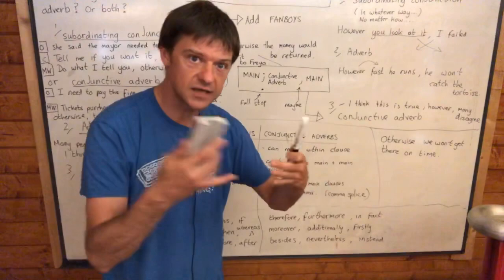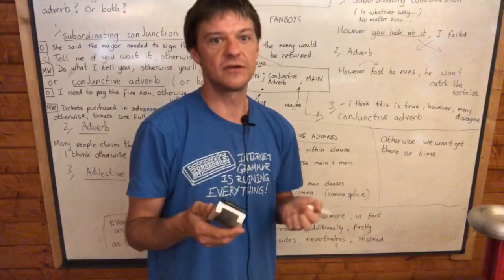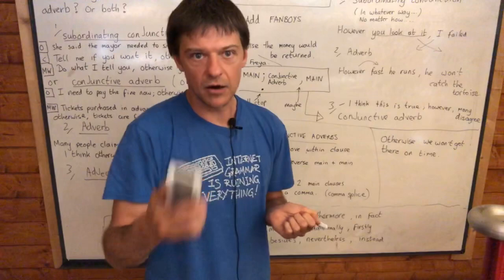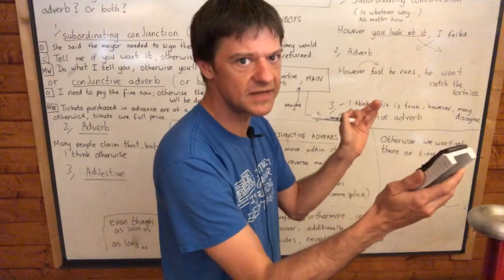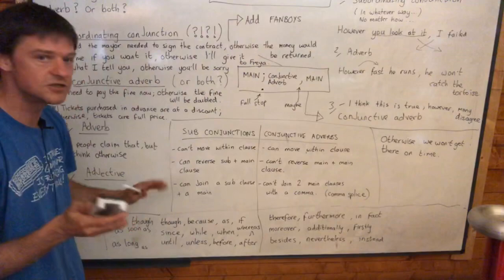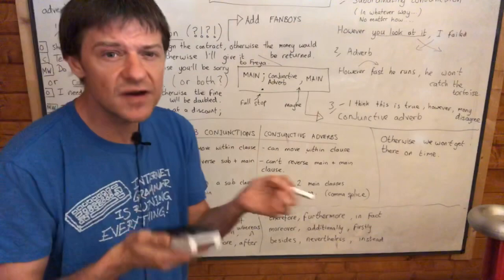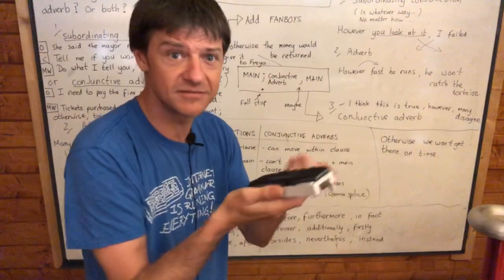Let's try with a concrete example. If I say 'I will get paid on Friday, therefore I will pay you back after the weekend,' you couldn't possibly say 'therefore I will pay you back after the weekend — I will get paid on Friday.' They must be in the order they're in; they can't be reversed. Subordinating conjunctions can be reversed. That's a very important distinction — we're trying to see how they function differently. Why do grammarians give them different names? Because they work very differently.